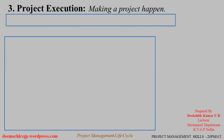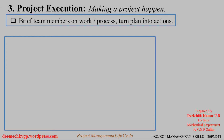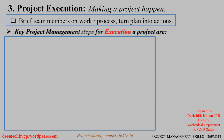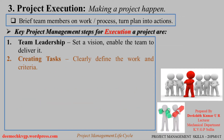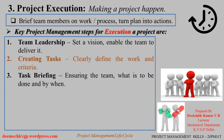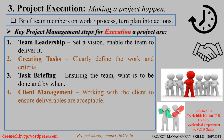The third phase is Project Execution — making the project happen and turning plans into actions. Key steps for execution: Team leadership — a team leader sets a vision and motivates the team to deliver results. Creating tasks — clearly define the work and criteria so each team member knows their role and job responsibilities. Task briefing — ensuring the team knows what is to be done and by when. Time management — what is to be done, when it is to be done, and who will do it.